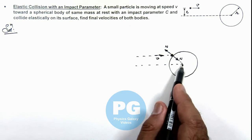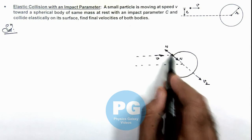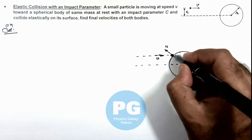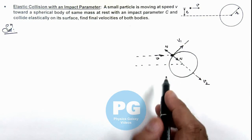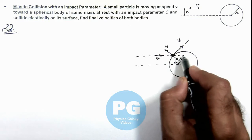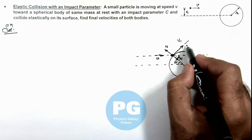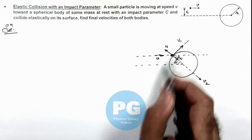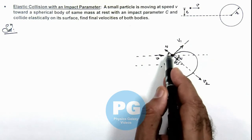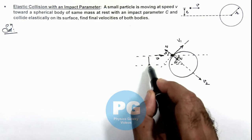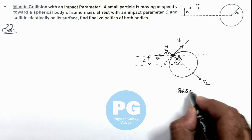As the spherical body was at rest, after collision it starts moving in the radial direction with velocity v2. The particle moves tangentially. As already discussed, for equal masses the bodies diverge at right angles — so if this angle is theta from the line of motion, this angle will also be theta and the other will be 90 minus theta. Since the impact parameter is c and the radius of the ball is r, we can write sine theta equals c by r.